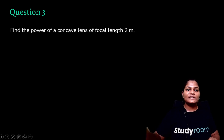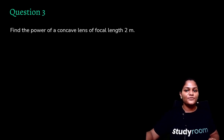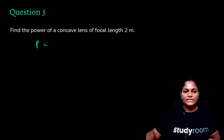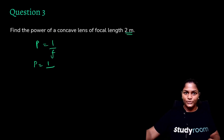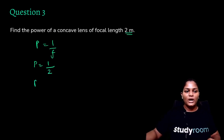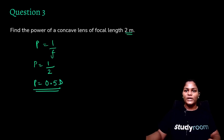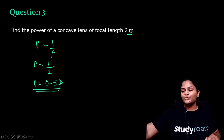Question: Find the power of a concave lens of focal length 2 m. Power = 1/f = 1/2 = 0.5 diopter. Since it's a concave lens, the focal length is negative, so power = −0.5 diopter.